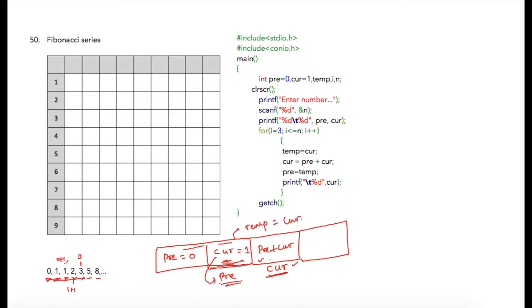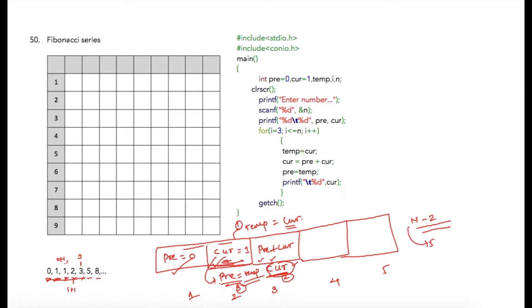Once the new current is calculated, we assign previous the value of temp. So the three steps are: first, store current into temp; second, update current as previous plus current; third, update previous with the value of temp. Since the first two values are already known, our loop should run for n minus 2 times. If the user enters 5, the loop executes 3 times.